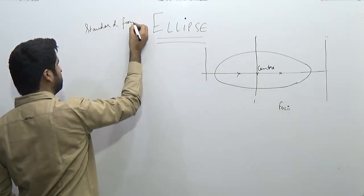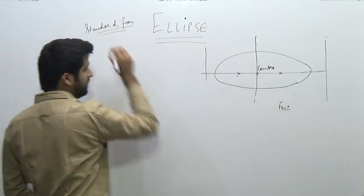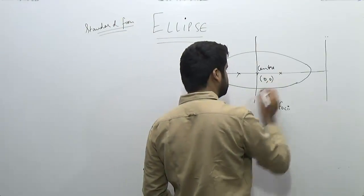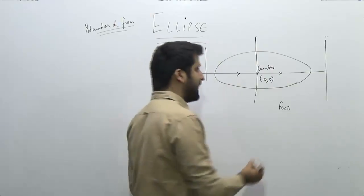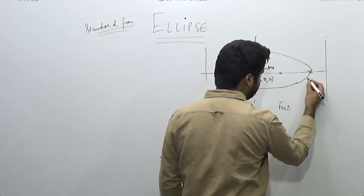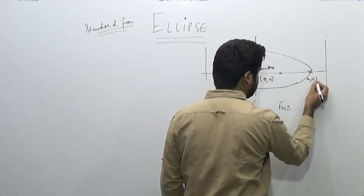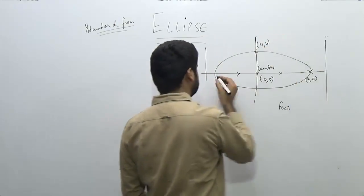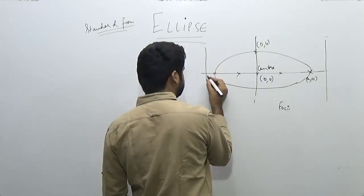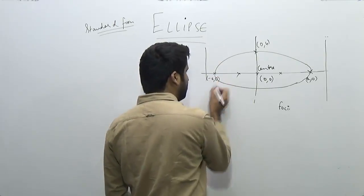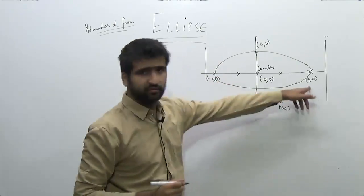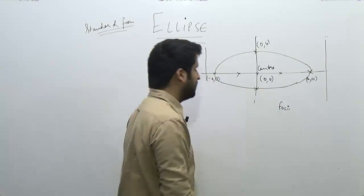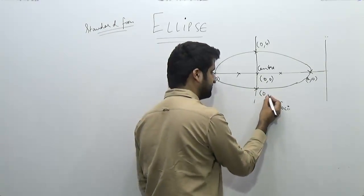Now let's discuss the standard form of the ellipse. In the standard form, the center is always at (0, 0). We denote the vertices as (a, 0), (−a, 0), (0, b), and (0, −b) by symmetry.